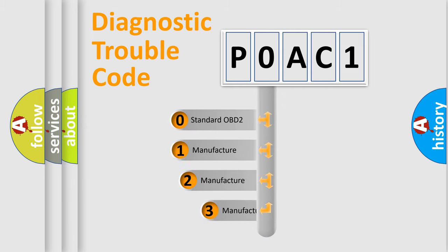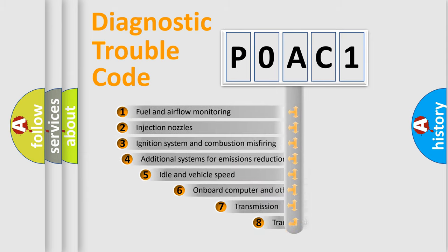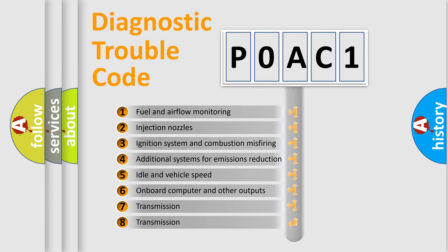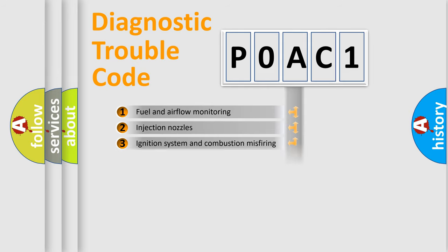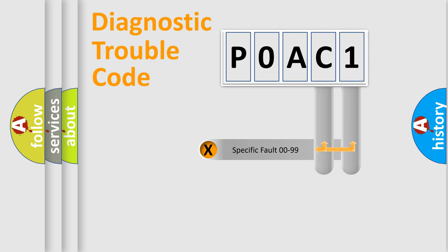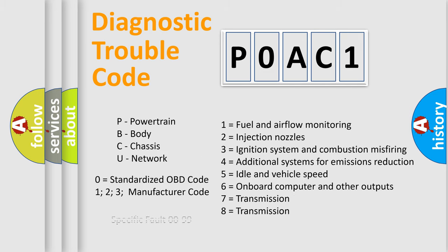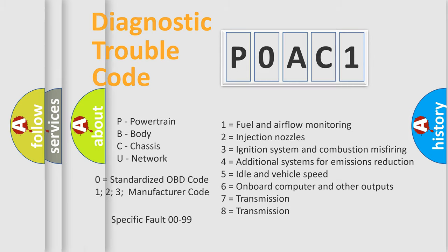If the second character is expressed as zero, it is a standardized error. In the case of numbers 1, 2, or 3, it is a manufacturer-specific error expression. The third character specifies a subset of errors. This division is valid only for the standardized DTC code, where only the last two characters define the specific fault of the group.